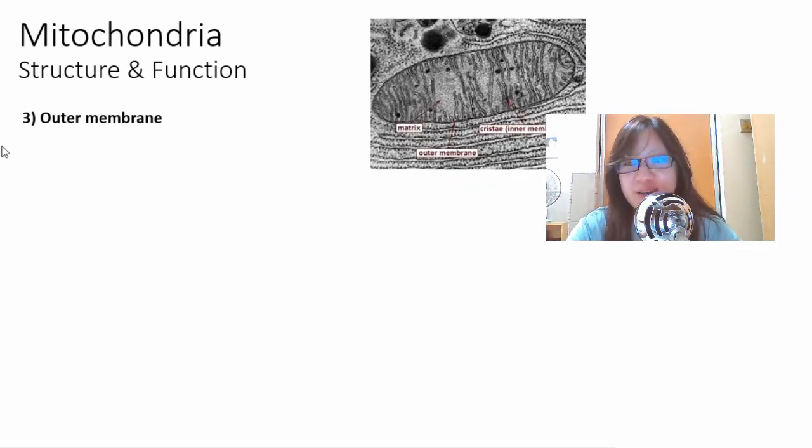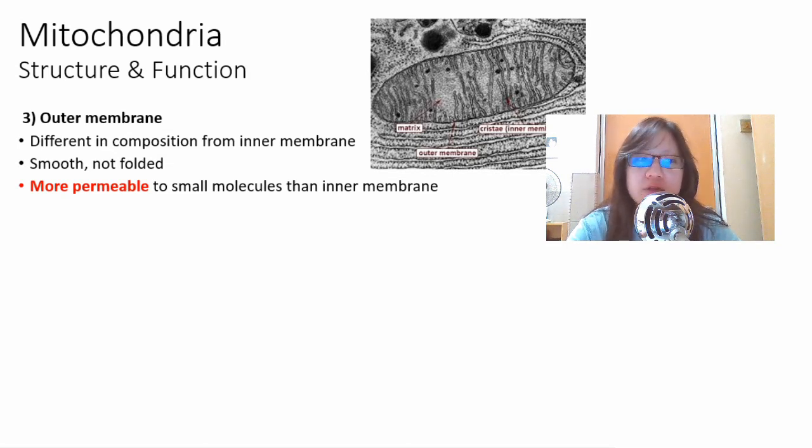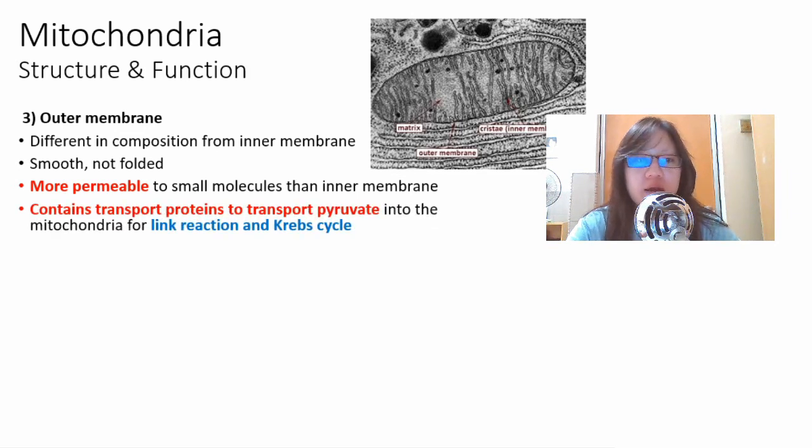Number 3, the outer membrane. The outer membrane does not have ETC and does not have membrane proteins. It's different in composition entirely. It is smooth, it is not folded, and it's more permeable actually. Inner membrane is impermeable to H plus ions but the outer membrane is actually more permeable to small molecules than the inner membrane because it needs to transport, it contains transport protein to transport pyruvate into mitochondria for link reaction and following that, Krebs cycle.